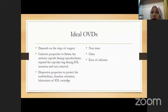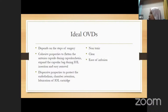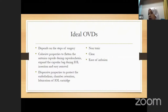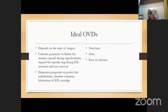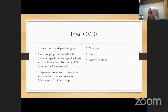For an ideal OVD, selection depends on the step of surgery. Cohesive OVDs, because they can flatten the capsule, are suitable during capsulorhexis and capsulotomy, and they open up the IOL bag for easy insertion. For dispersive OVDs, the function is to protect the endothelium; if there is a posterior capsule rupture and you want to tamponade the vitreous, you use a dispersive OVD. It should be non-toxic, clear, and easy to infuse.